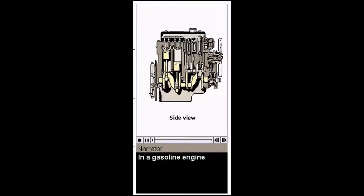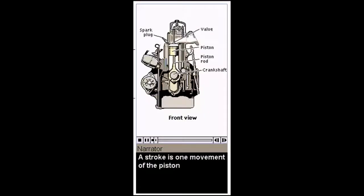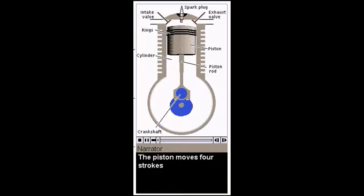In a gasoline engine, a volatile mixture of fuel and air is ignited within a cylinder causing a sudden expansion of gases. The expanding gases push down on a piston, which turns the crankshaft. A stroke is one movement of the piston, either up or down. Most car engines use a four-stroke cycle. The piston moves four strokes, then repeats the action continuously.